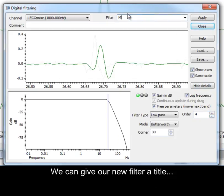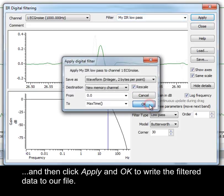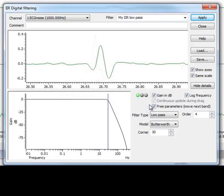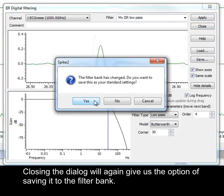We can give our new filter a title. And then click Apply and OK to write the filtered data to our file. Closing the dialog will again give us the option of saving it to the filter bank.